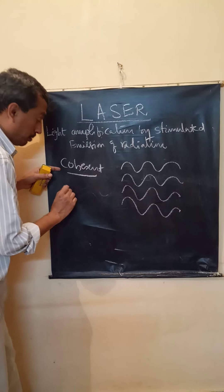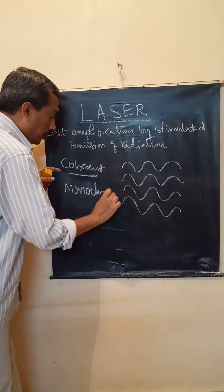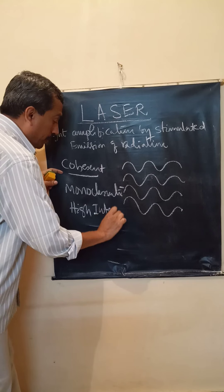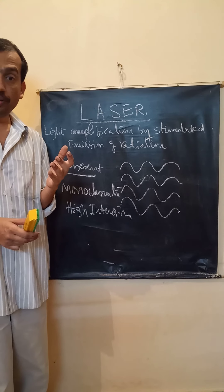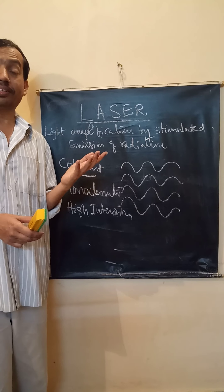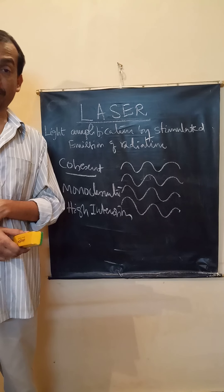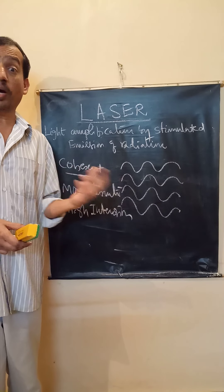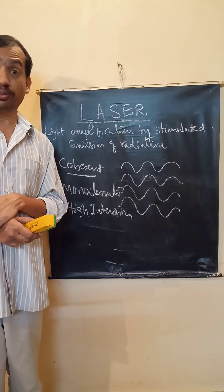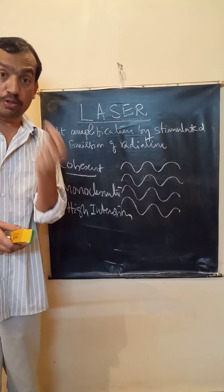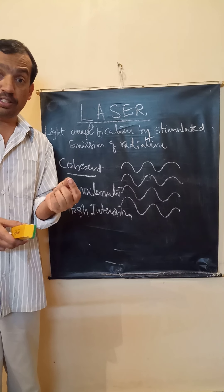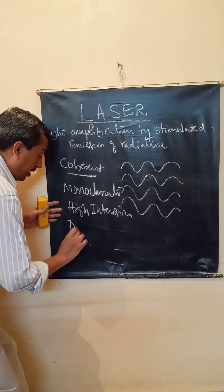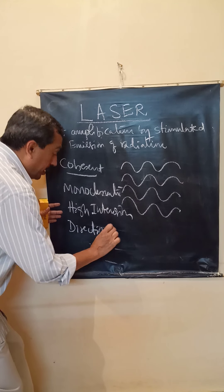Second, there is one wavelength — monochromatic light. Third, high intensity. High intensity means one megawatt per millimeter square area. Intensity of the order of megawatt per millimeter square can be produced. That is the light intensity used in CO₂ — carbon dioxide — laser for cutting tools. Then fourth, directionality — it is directional.